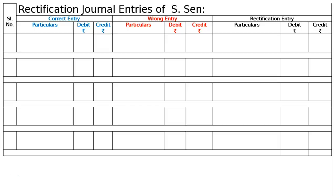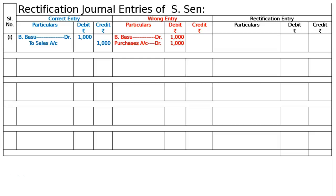First error: a sales invoice for Rs.1000 for goods sold on credit to B.VASU was entered in the purchases book, but the amount was correctly debited to the account of B.VASU. The correct entry is B.VASU debited to sales account Rs.1000, but it was by mistake recorded in the purchases book. B.VASU was correct, i.e., B.VASU debited. Hence, two sales will come in the credit — write down to sales Rs.1000.